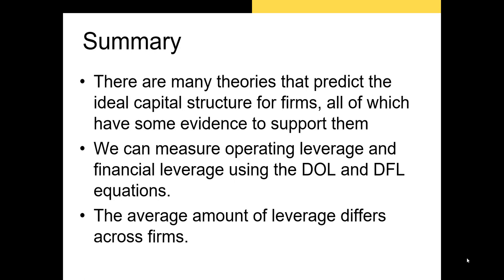Let's summarize what we just covered. We introduced many of the popular theories that predict capital structure, like trade-off theory, pecking order theory, agency theory, market timing, and signaling theory, and there's at least some evidence for each of these in the real world. Next, we introduced the formulas for DOL, DFL, and DTL, and showed why they're important. We also introduced the TIE ratio, which allows us to determine the number of times our firm can cover interest expenses using EBIT. Finally, we discussed leverage around the world and the fact that variations in leverage across countries are likely due to differences in the relationship between lenders and borrowers.